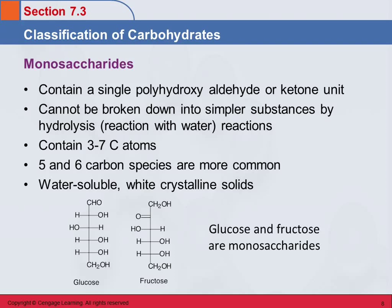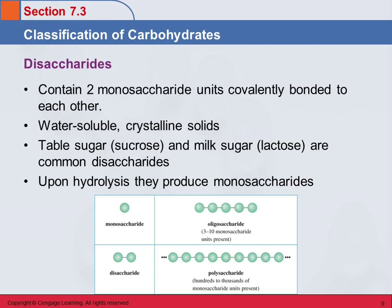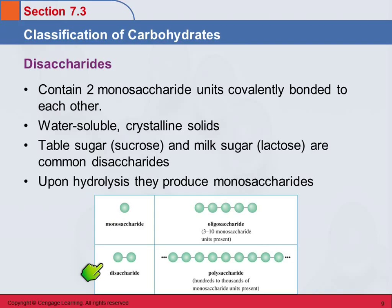Then we have the disaccharides — di meaning two. A disaccharide contains two monosaccharide units that are covalently bonded to each other. These are also water-soluble crystalline solids. Examples are table sugar, which has the chemical name sucrose, and milk sugar, which is lactose. When you hydrolyze a disaccharide, you get two monosaccharides. A disaccharide would be two monosaccharide units hooked together — you could have two fructose molecules, two glucoses, or one glucose and one fructose, all kinds of different combinations.